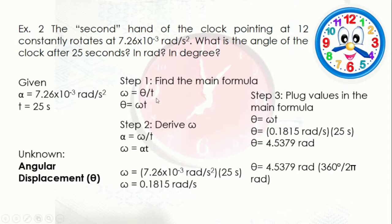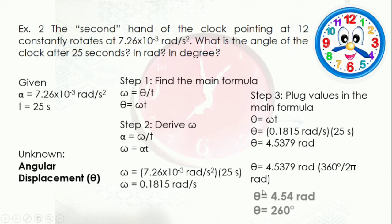Plugging the values into the main formula for angular displacement, we get 4.5379 radians. Converting to degrees: 4.5379 rad times 360 degrees over 2π rad gives 260 degrees and 4.54 gradients.